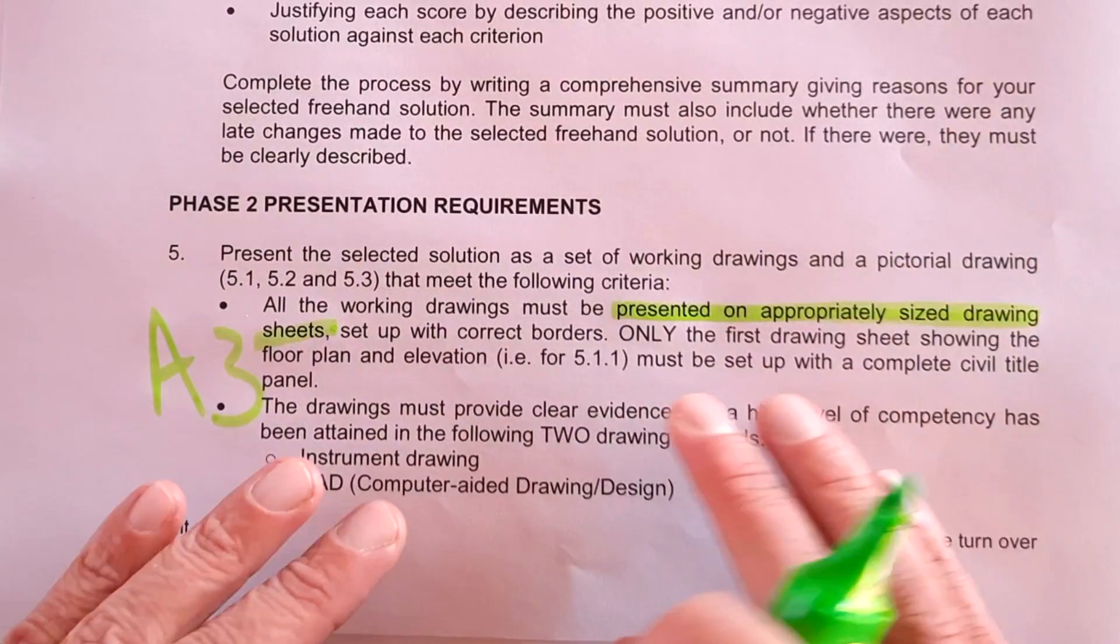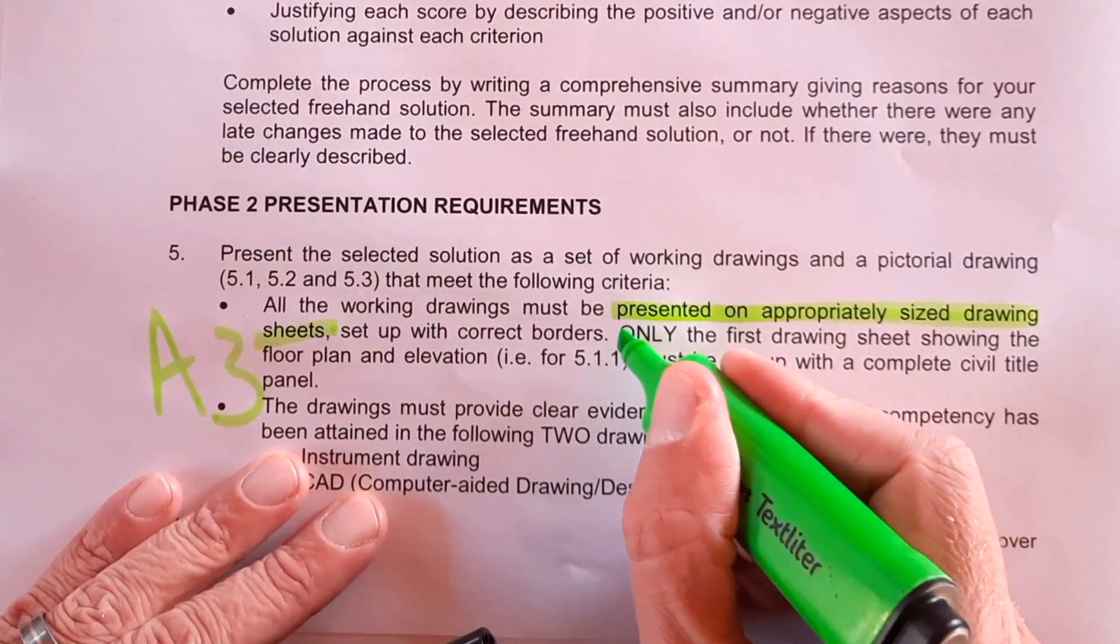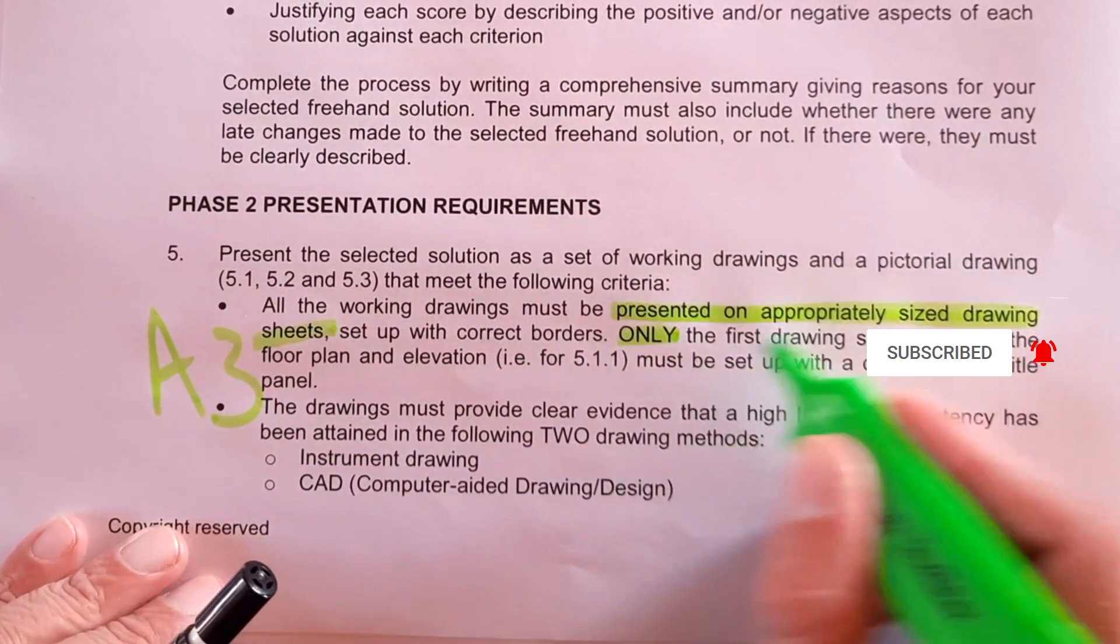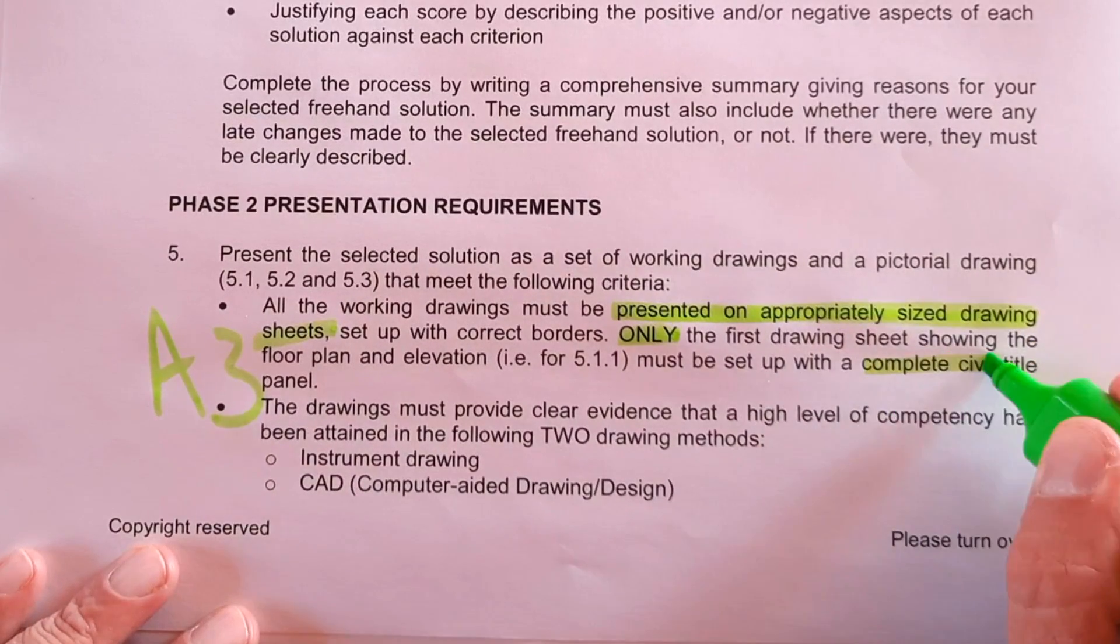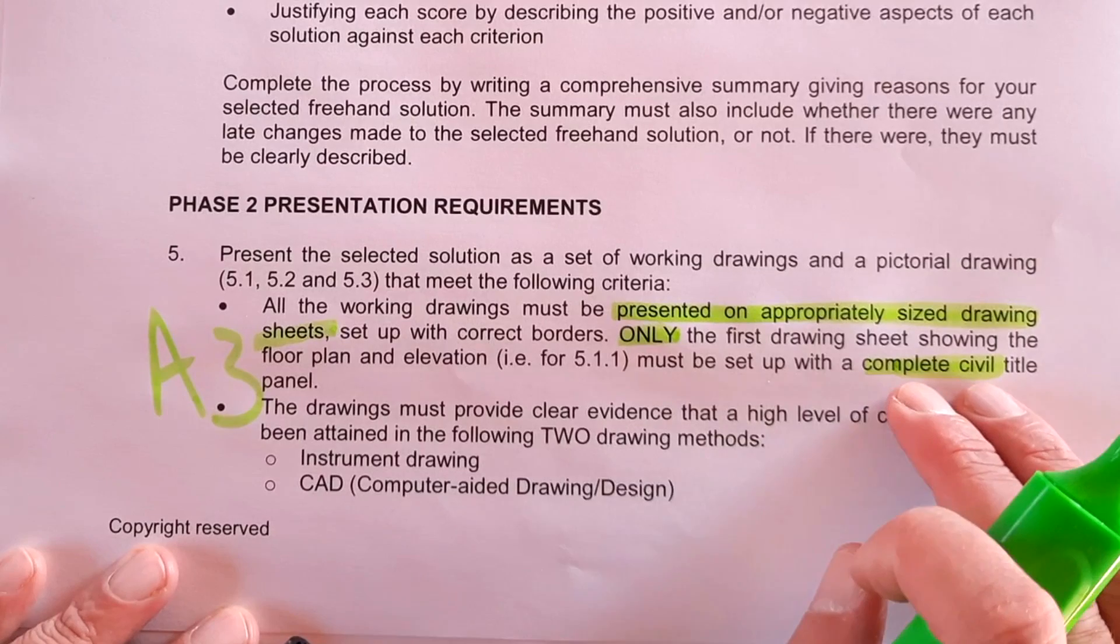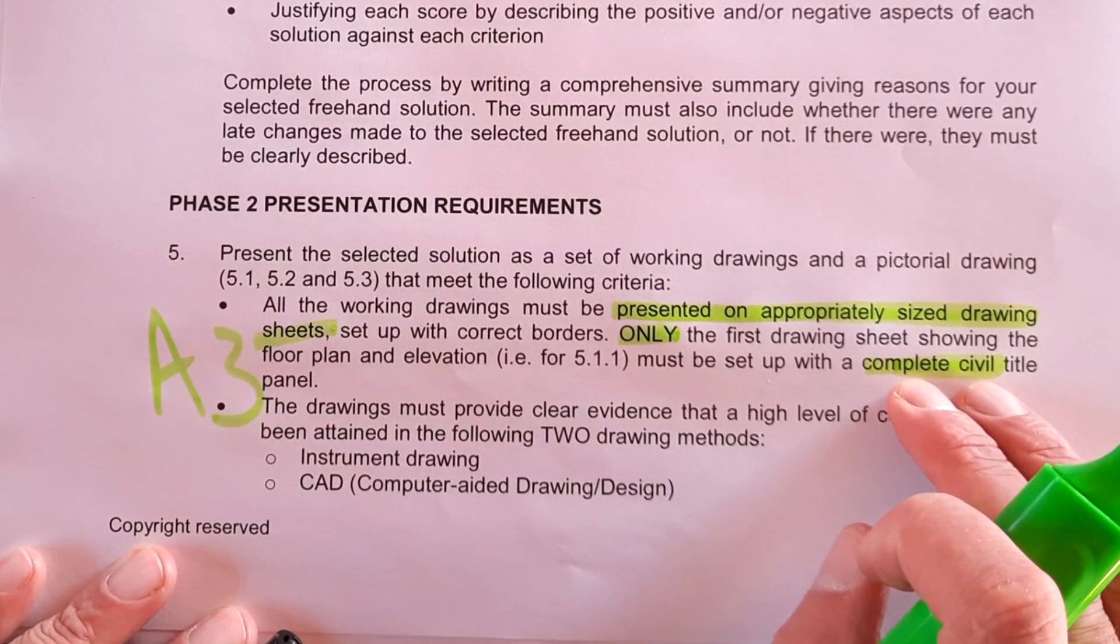I'm going to show you some examples of this but only the first page which will be the floor plan needs to have a full title panel, complete civil title panel. Please watch the previous episode to see the requirements of that civil title panel.